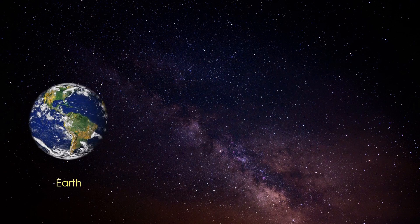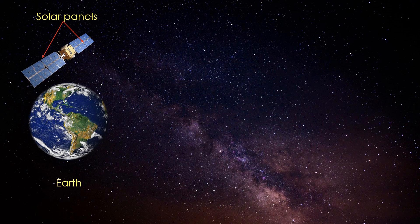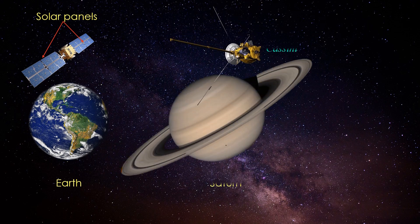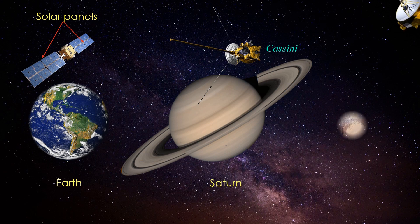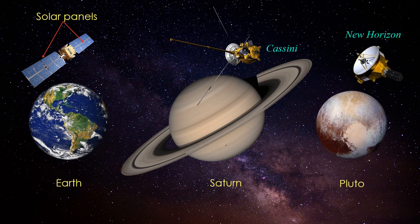If you look at the satellites around Earth, you will see solar panels on them. But if you see Cassini satellite on Saturn or New Horizons satellite on Pluto, they do not have solar panels.